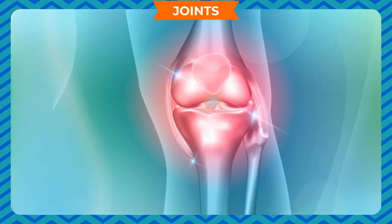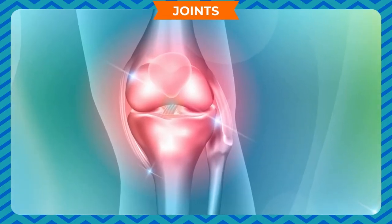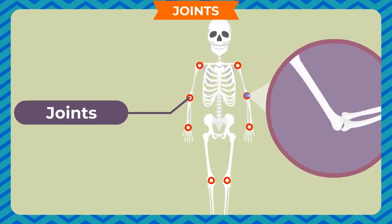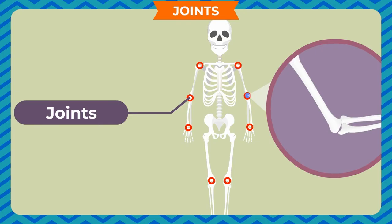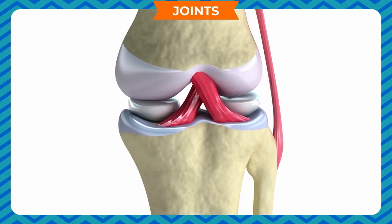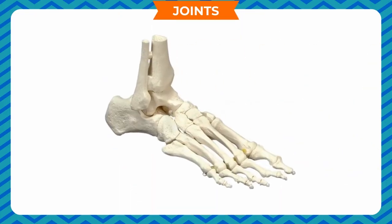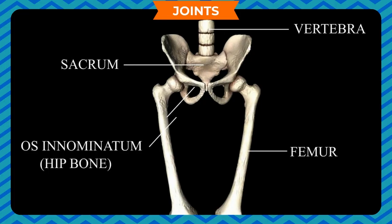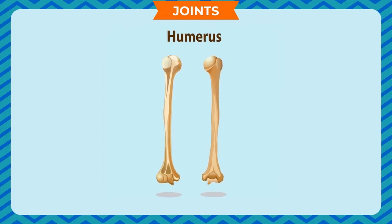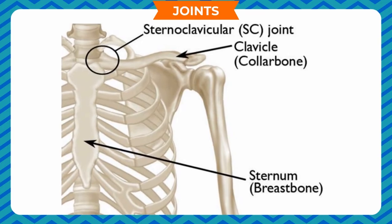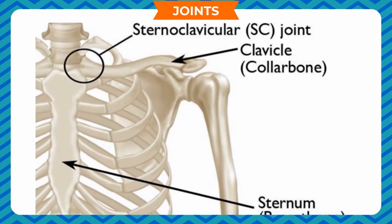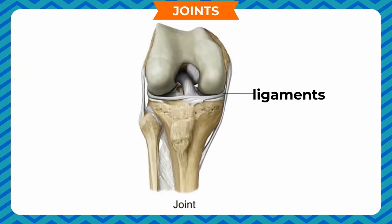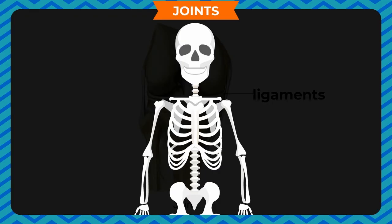Joints: The point at which two bones meet is called a joint. The joints are strong enough to withstand jerks. The ends of the bones are covered with soft cartilage, which acts as a shock absorber and reduces friction between the bones. The ankles and feet have a number of small bones. The femur is attached to the hip bone through the hip joint. The upper arm has one long bone called the humerus, which is attached to the vertebral column through the collar bone and shoulder blade. The bones are held together at the joints by strong bands called ligaments.